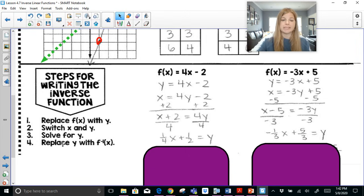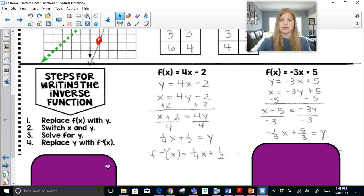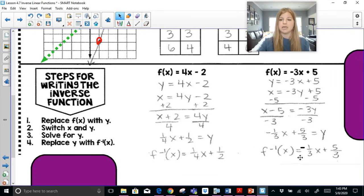Now the very last step is to replace this y with the inverse function notation, which looks like f to the negative 1 power of x. That's it. So the inverse function is (1/4)x + 1/2. Over here, I would say the inverse function is (-1/3)x + 5/3.